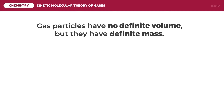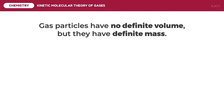The second postulate is that gas particles have no definite volume, but they have definite mass. Unlike liquids, which are also fluid, gases have negligible volume because of two major reasons. First, the distances between the particles are larger than the actual particles. Second, these particles are constantly moving. Thus, we say that gases do not have a definite volume. Instead, gases follow the shape of their containers, meaning the volume of the gas is the volume of its container.